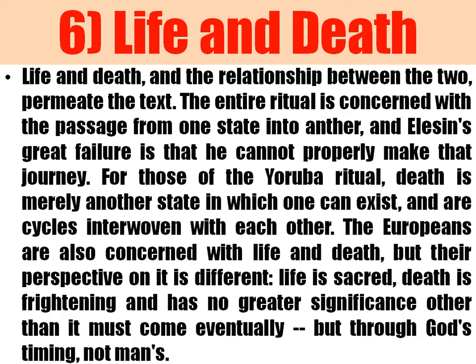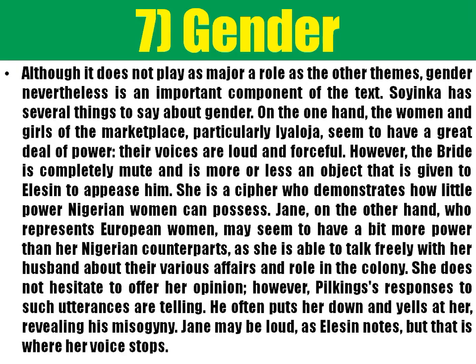We also have the theme of gender, which plays a major role in the play. We saw that Iyaloja is one of the leaders in the community and is female. For somebody to be a horseman for the king, he has to be male. That is why Elesin was appointed in the first place to be the king's horseman, and his son was to succeed him.